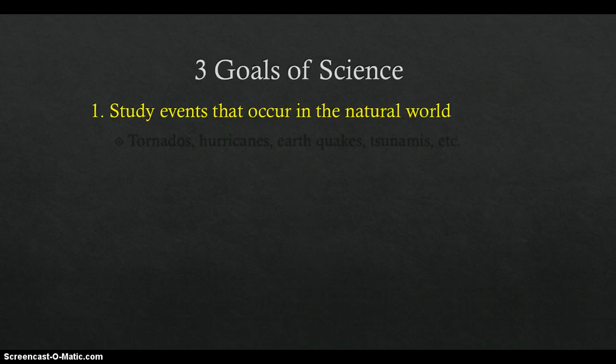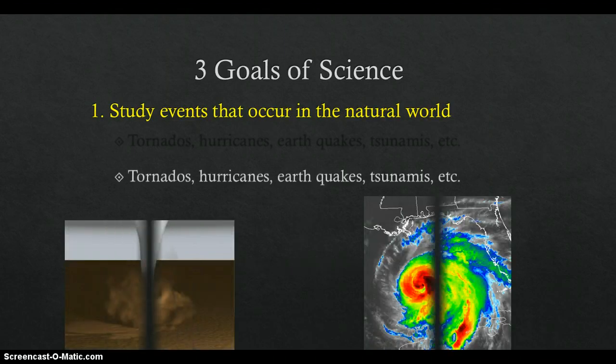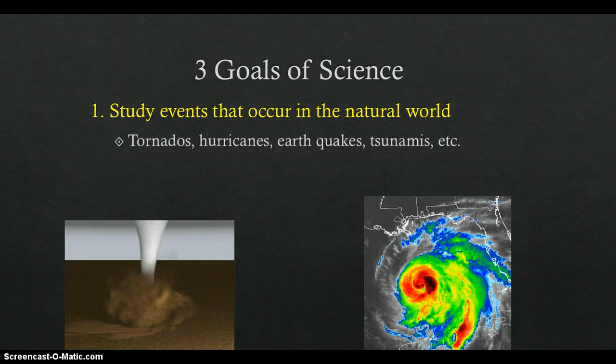Our second objective is to identify the three goals of science. The first goal of science is to study the events that occur in the natural world. These events could include tornadoes, hurricanes, earthquakes, and tsunamis.